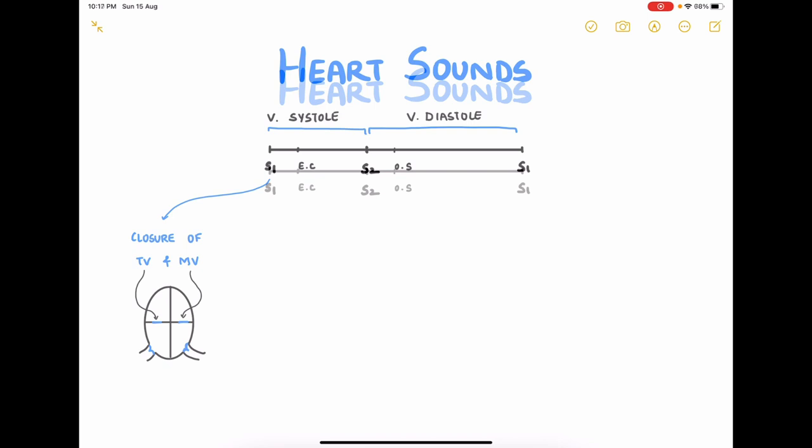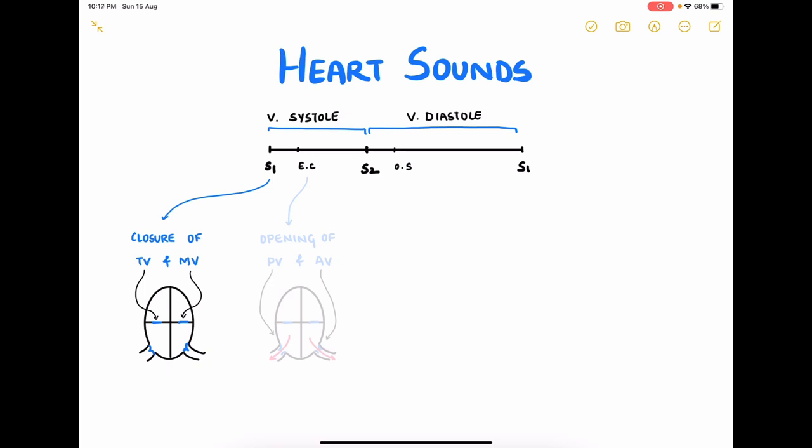The first heart sound is produced due to closure of tricuspid valve and mitral valve at the onset of ventricular systole as shown in this really simple diagram. The ejection click is produced due to opening of the pulmonary and aortic valves a little after the onset of ventricular systole. That would mean that the time between the first heart sound and the ejection click corresponds to isovolumetric contraction of the ventricles.